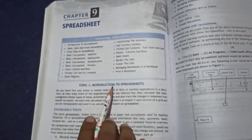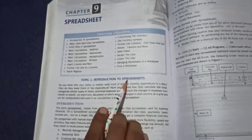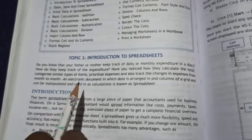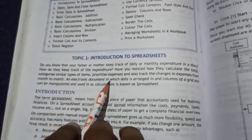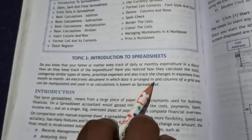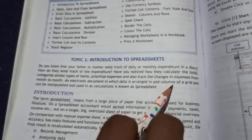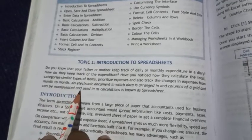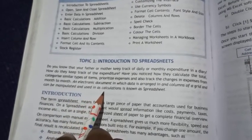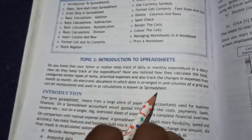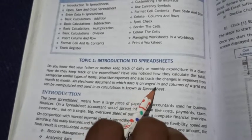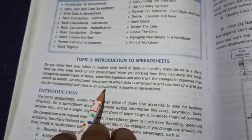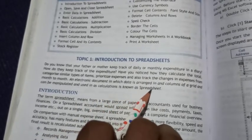First topic is introduction to spreadsheet. What is a spreadsheet? An electronic document in which data is arranged in rows and columns of a grid and can be manipulated and used in calculations is known as a spreadsheet.